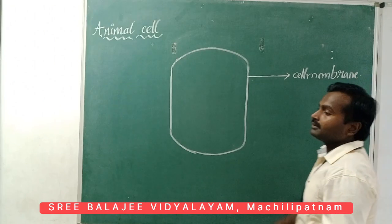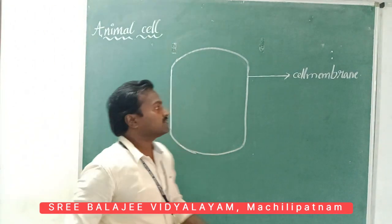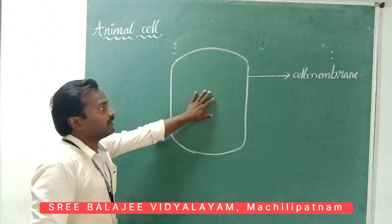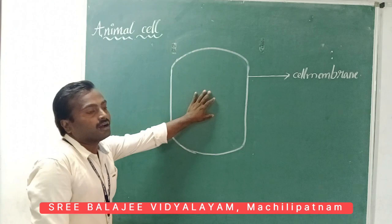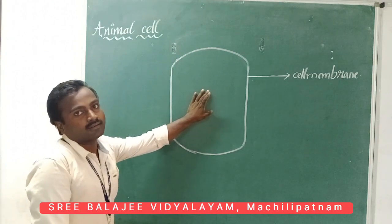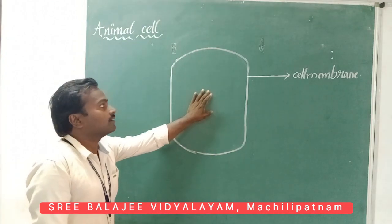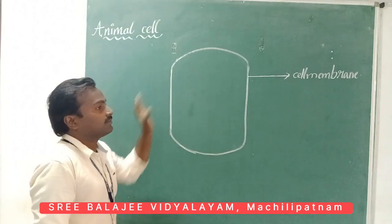Another name for cell membrane is plasma membrane. This is the outer layer of our cell — the animal cell. This is the cell membrane.